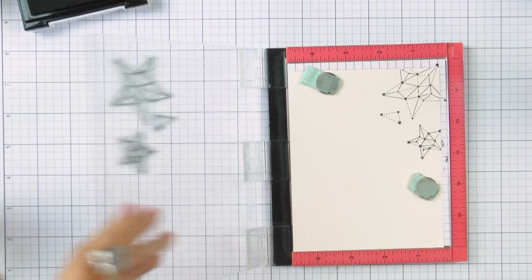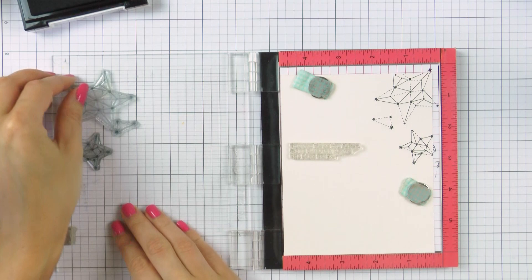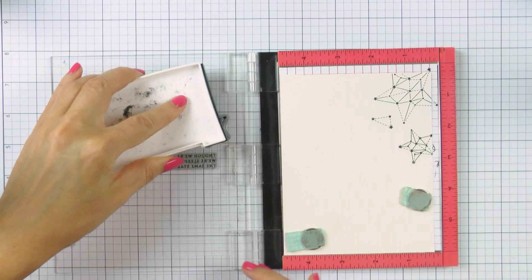I'm repositioning my images and also adding a sentiment and stamping more stars onto my background. I'm using a stamp positioner but this stamping can easily be done using a clear block.